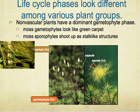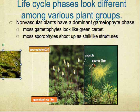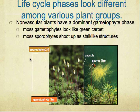Most sporophytes shoot up like a stalk-like structure — a stalk in the flower — as you can see. Here I've represented this idea: this over here is the sporophyte stalk-like structure, and this is the gametophyte. The gametophyte is the haploid cell, and the sporophyte is the diploid cell.